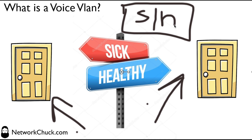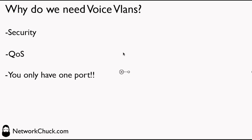That's kind of like network traffic. You've got your sensitive traffic that needs priority and needs to be separated so it's secure, and you have your data traffic over here. That's essentially what a voice VLAN is — putting a boundary between the voice traffic and the data traffic, making sure we can prioritize it and keep it safe.